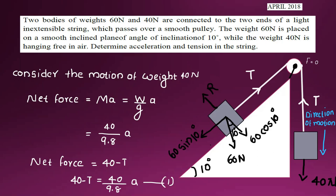Let's analyze the angle of the inclined plane. For the body on the inclined plane, we have two components. The vertical direction component is 60 cos 10, because the angle is in the vertical direction. The component along the inclined plane is 60 sin 10.